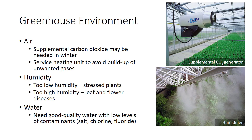Sufficient light must also be available when supplemental carbon dioxide is being added. Another problem that can occur in a greenhouse during the winter months is the buildup of unwanted gases. This problem can be overcome by properly servicing the heating system to make sure it runs at peak efficiency and, in some instances, using air purification units.